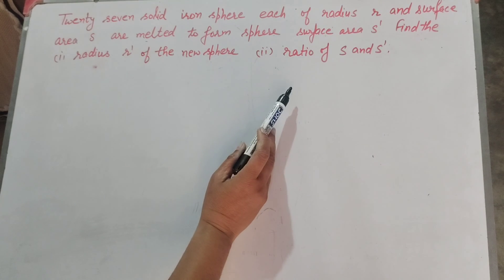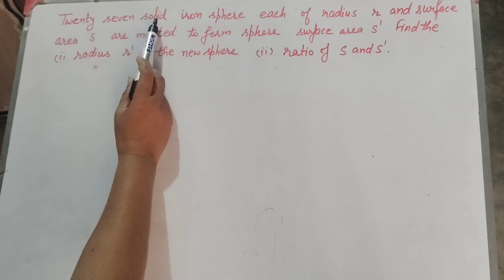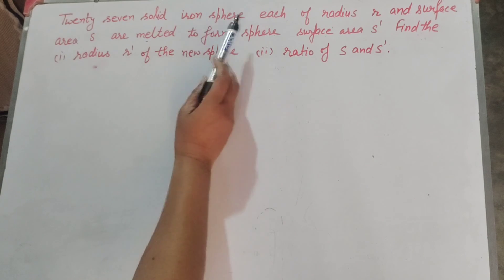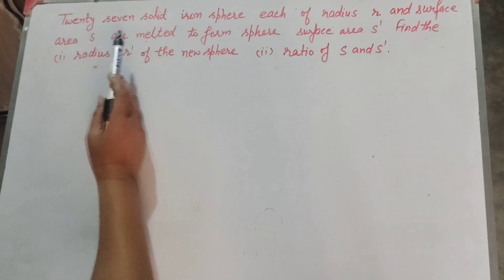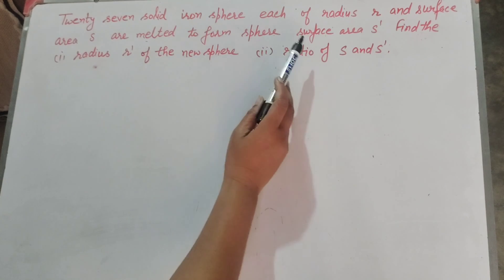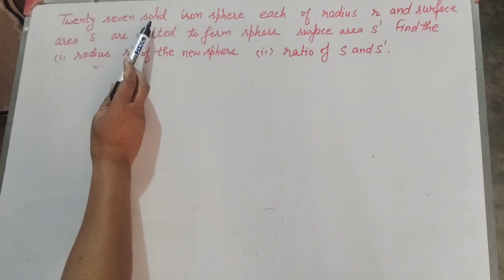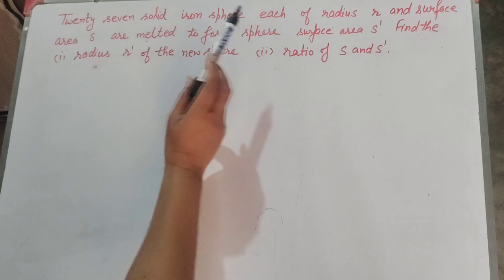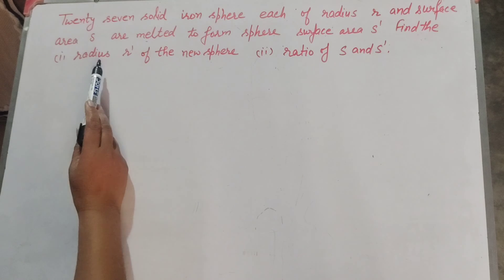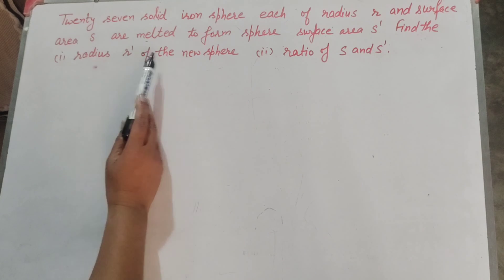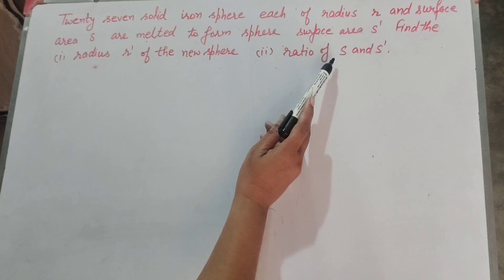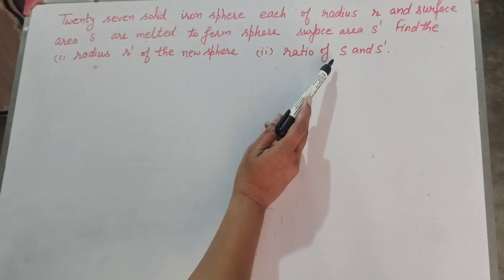In this question, given is 27 solid spheres each of radius r and surface area s. These 27 spheres are melted to form one sphere, and the surface area of the new sphere is s'. We find radius r' of the new sphere and ratio of s and s'.